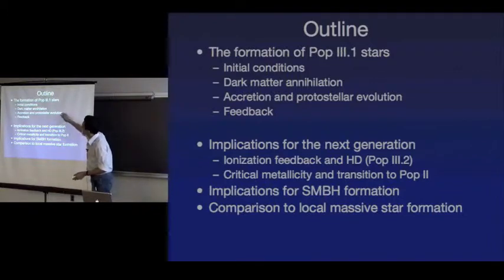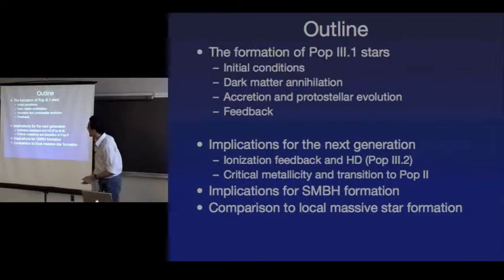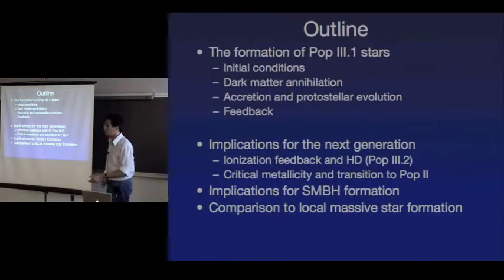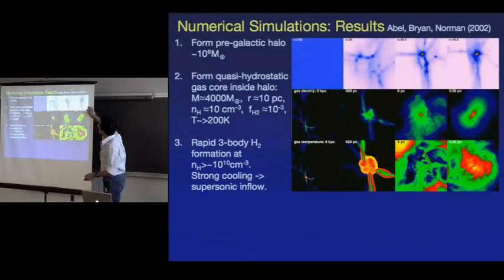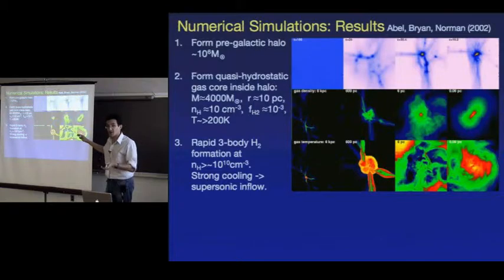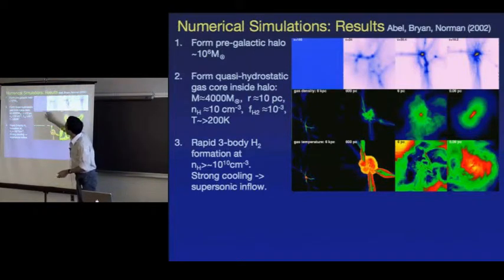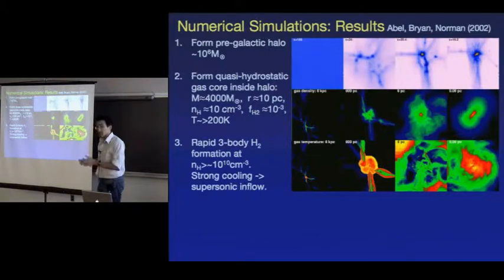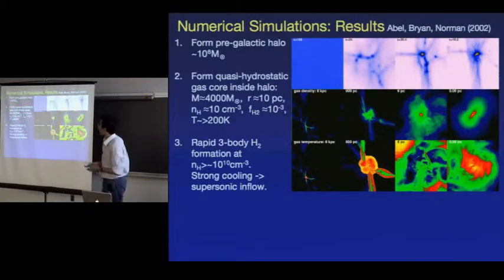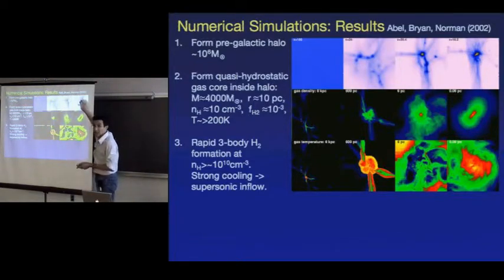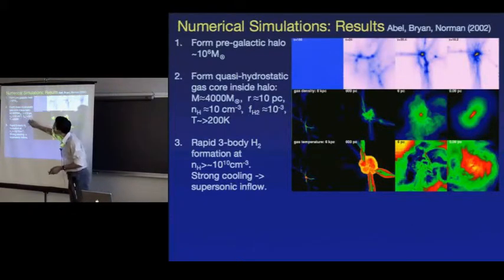I'll mostly be talking about Population 3.1, which is most well-specified. At redshift 18, you've got gas collected in this dark matter mini-halo, resolving down to scales of order astronomical units or even sub-AU, reaching near-stellar densities. What we see then is a quasi-hydrostatic collection of gas — because cooling rates are very low, it's mostly molecular hydrogen formed through catalysis with free electrons through H-minus, with a trace amount able to cool the gas down to about 200 Kelvin through ro-vibrational transitions of H2.